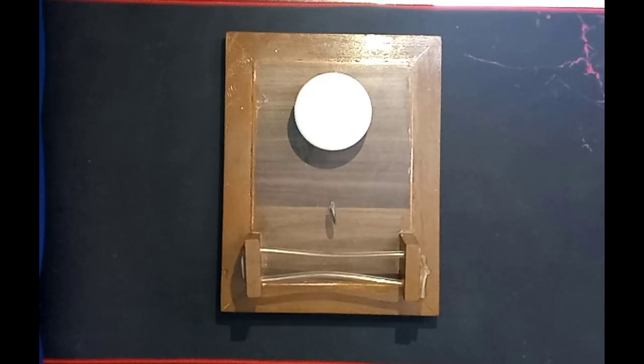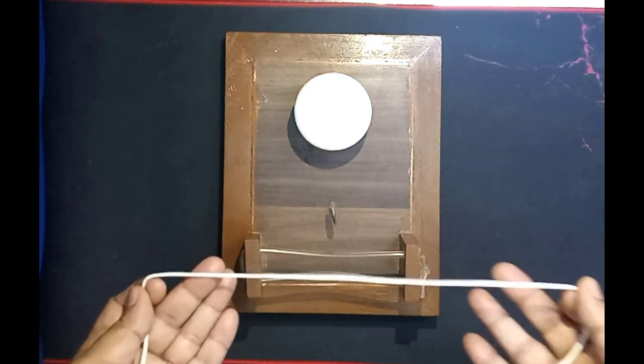Today inshallah we will learn how to make reef knot. Reef knot is also called square knot. Reef knot tying can be performed by two methods: two-handed method and one-handed method. Right now we will learn how to make reef knot by two-handed method. So this is the string.